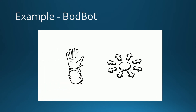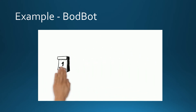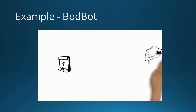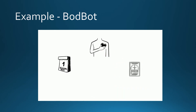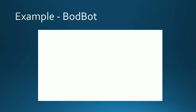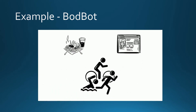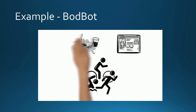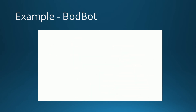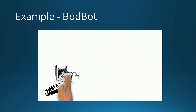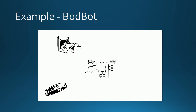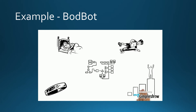Each day BodBot asks the user how they are feeling and uses that as a gauge to determine how intense the day's workout would be. If the user logs a large amount of food, the application suggests more intense workouts to work off the extra calories. BodBot's integration with Fitbit also allows it to track your sleep and tailor exercise routines to that. The workouts continually adapt with the user's data and progress.